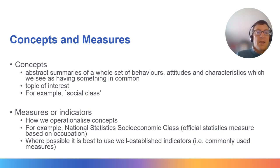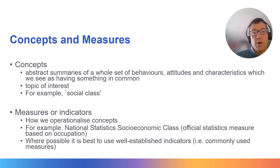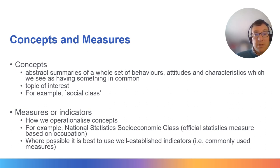In social science research, we are often interested in concepts. For example, these might be gender, ethnicity, or social class.